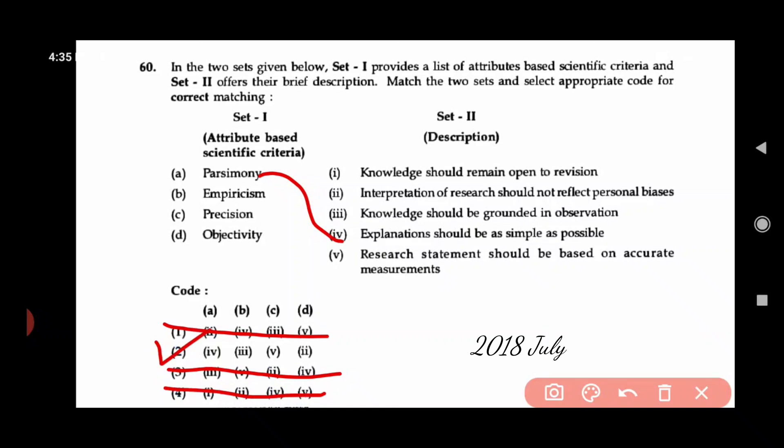Empiricism will be knowledge should be grounded in observation. And precision will be research statement should be based on accurate measurements. Objectivity will be interpretation of research should not reflect personal biases as possible.